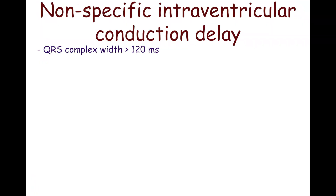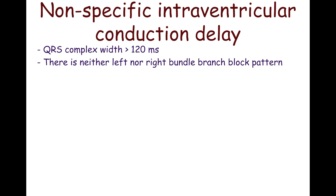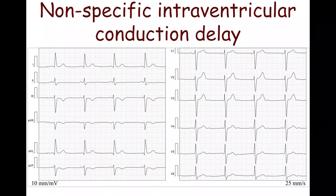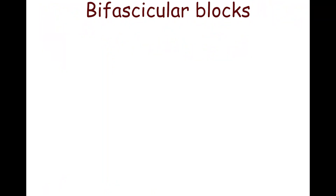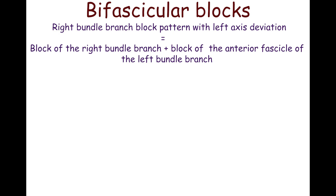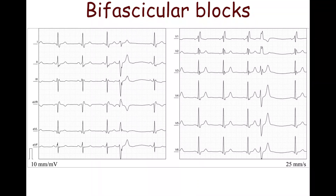If the QRS complexes are wide — more than 120 ms — but show a pattern of neither left nor right bundle branch block, a non-specific intraventricular conduction delay is diagnosed. This ECG shows a pattern of left anterior fascicular block, but QRS complexes are 140 ms in width. The combination of right bundle branch block pattern with left axis deviation belongs to bifascicular blocks; in this case, both the right bundle branch and the anterior fascicle of the left bundle branch are blocked. On this ECG, right bundle branch block pattern is combined with left axis deviation, with a QRS complex width of 140 ms.